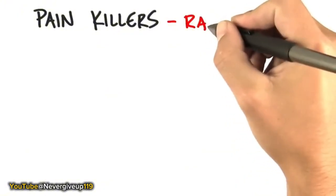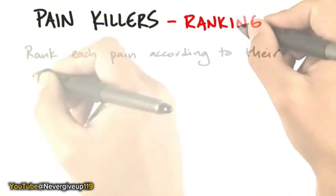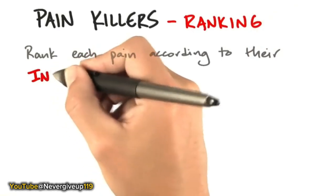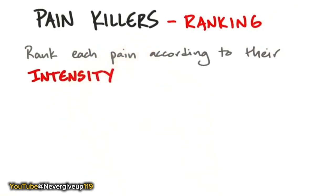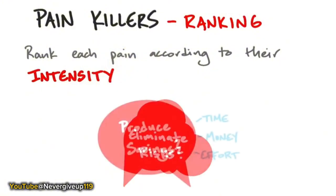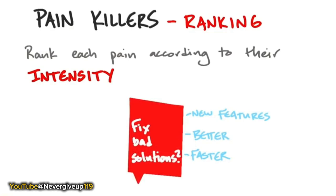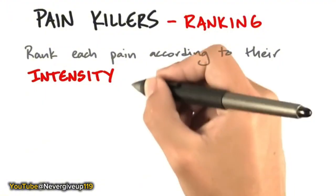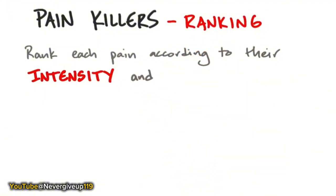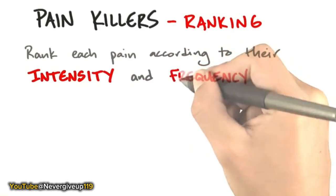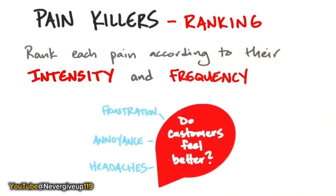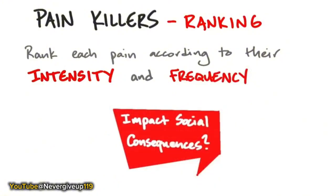Some tactics for figuring out pains: rank each pain that your products and services kill according to their intensity for the customer. What you're looking for is whether this is a life-saving pain, or something customers say they've lived with for years and could live with for another couple of years. How important is it in the list of pains in the area you're serving? And not only how intense is the pain, but how often does it occur? If it occurs just once a year people might live with it, but if it's occurring daily or hourly, you're solving something pretty important.